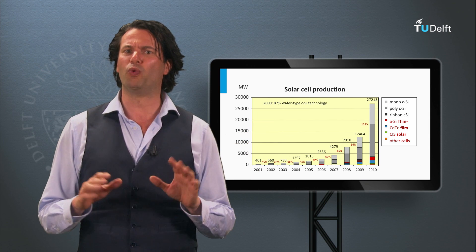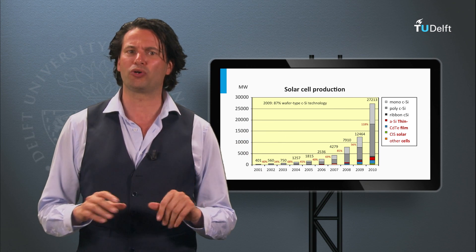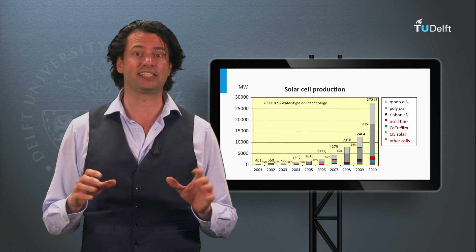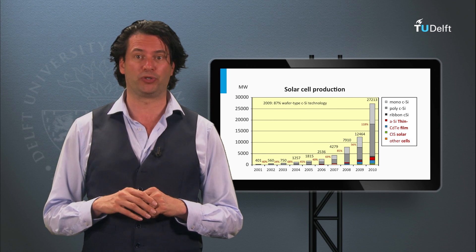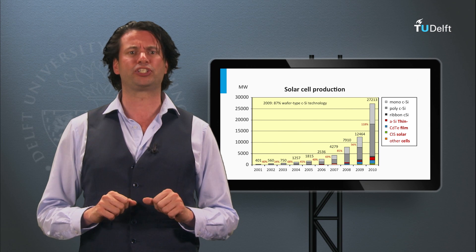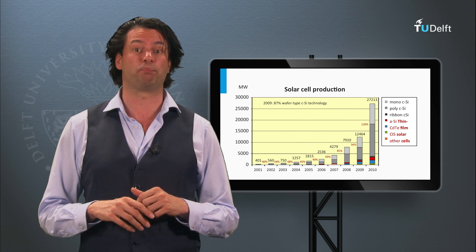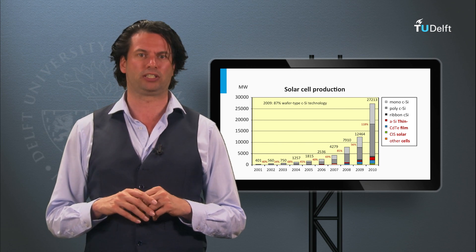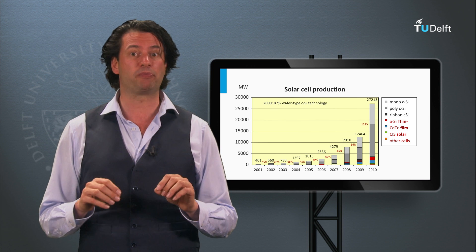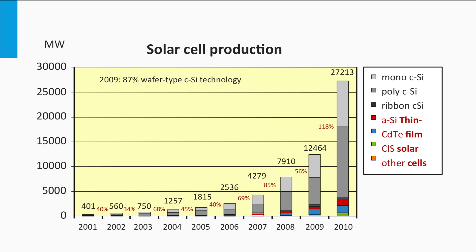The figure shows the worldwide solar cell production. The vertical axis represents the annual production, expressed in total produced power capacity in MW. The horizontal axis represents time. The solar cell production is increasing exponentially every year.